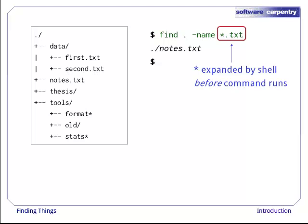Well, if you recall, the shell expands wildcard characters like star before commands run. Since *.txt in the current directory expands to notes.txt, the command we actually ran was find . -name notes.txt. Find did what we asked. We just asked for the wrong thing.